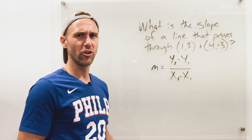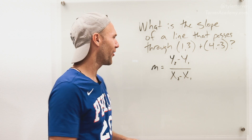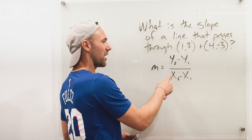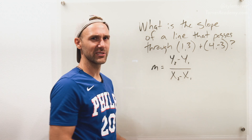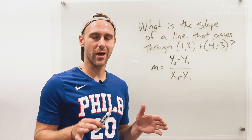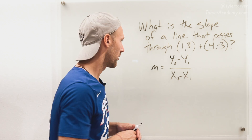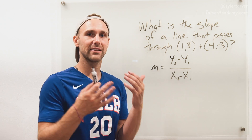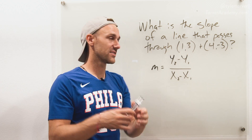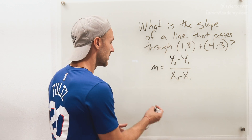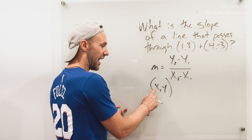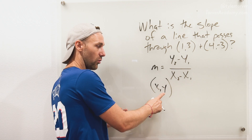And if you're like, Mr. Tarver, my notes say that it's y1 minus y2 over x1 minus x2 — that's fine, it's the same thing. Don't at me. So what I want to do is I always like to label these in my coordinates so that I don't mess up or get confused, because it's easy to get confused. Remember this: x is first, y is second.